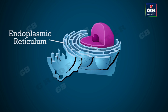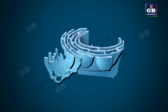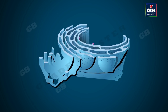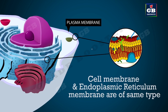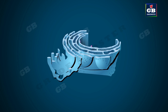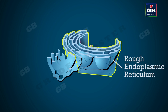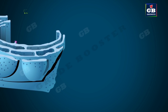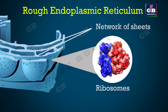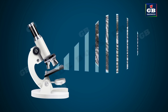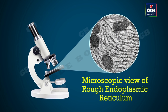The endoplasmic reticulum is located around the nucleus and looks like a network of tubes and sheets made up of a special membrane similar in structure to the plasma membrane. There are two types: rough endoplasmic reticulum and smooth endoplasmic reticulum. The rough endoplasmic reticulum looks like a network of folded sheets with many dot-like structures called ribosomes. Under the microscope, these ribosomes give it a rough appearance, which is why it is called rough endoplasmic reticulum.